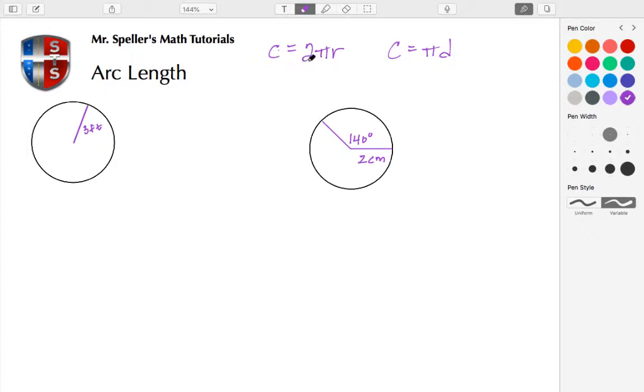We're going to use the first formula here, so C is equal to 2πR. In this particular example, we want to find the entire distance around this circle, so our arc length is this entire arc that we're finding.